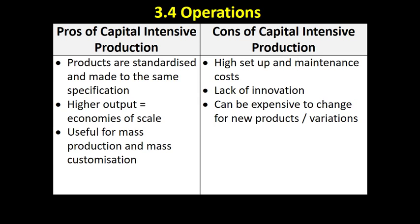The cons of capital intensive production are high set-up and maintenance costs for a factory. There may also be a lack of innovation, as machines don't come up with ideas — people do. And it can be expensive to change the production line if you want to produce a new product or variations. For example, switching from producing red paint to green paint may involve half a day or a day of adjusting and cleaning the machinery so the next batch comes out in the right colour.